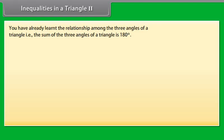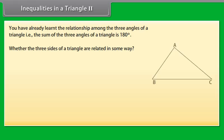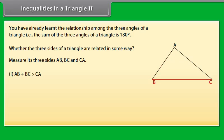The converse of this theorem is also true, which states that in any triangle, the side opposite to the greater angle is longer. Inequalities in a triangle: AB plus BC is greater than CA; BC plus CA is greater than AB; and CA plus AB is greater than BC. Thus, we conclude that the sum of any two sides of a triangle is greater than the third side.